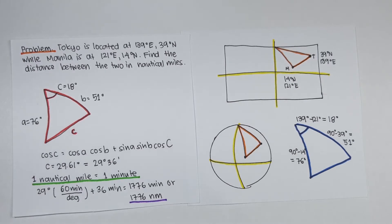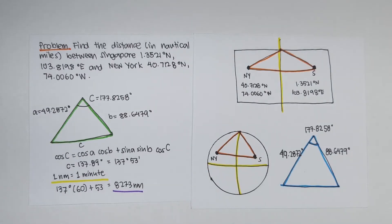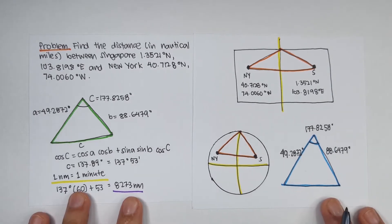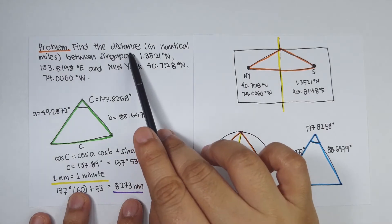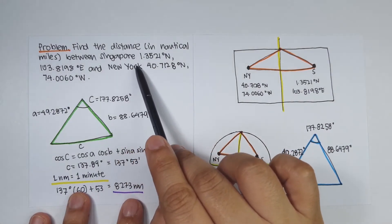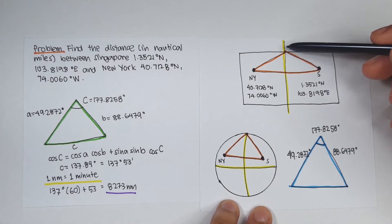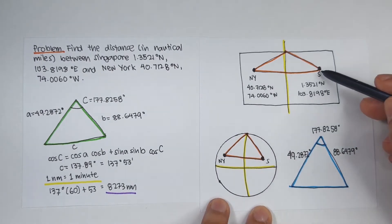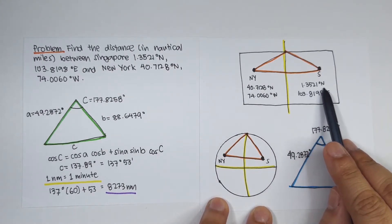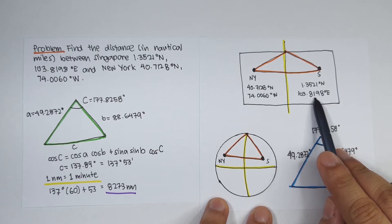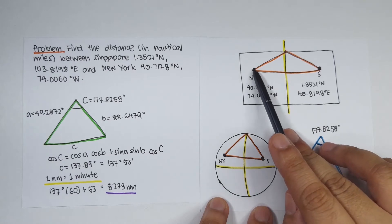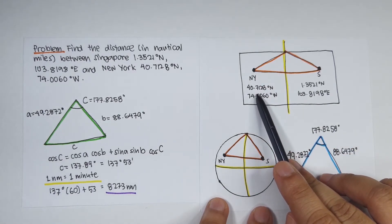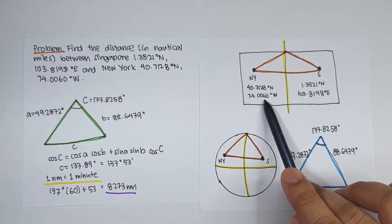In the next example, we solve the distance between two locations where one is east and one is west. Problem: find the distance in nautical miles between Singapore at 1.3521 degrees north and 103.8198 degrees east, and New York at 40.7128 degrees north and 74.006 degrees west.